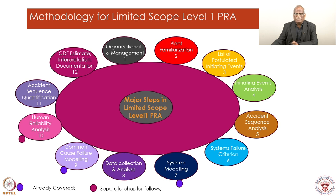Once plant familiarization is done, a list of initiating events is made - what can go wrong. Typically this list might have something like 20 to 25 initiating events. The key requirement is that the list of initiating events should be as complete as possible, because any event left out will leave some residual factor in terms of safety or risk.